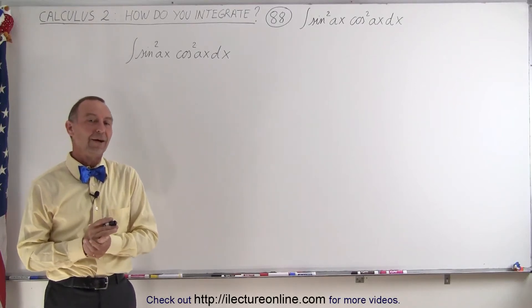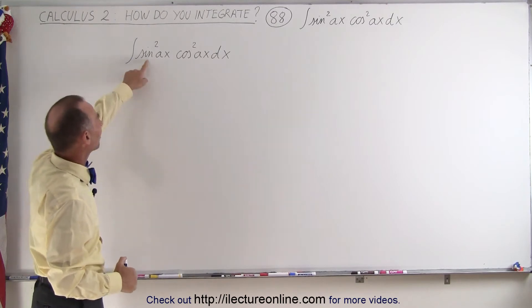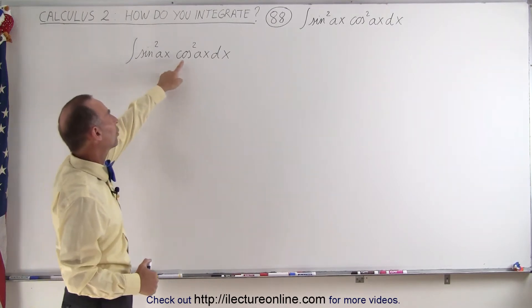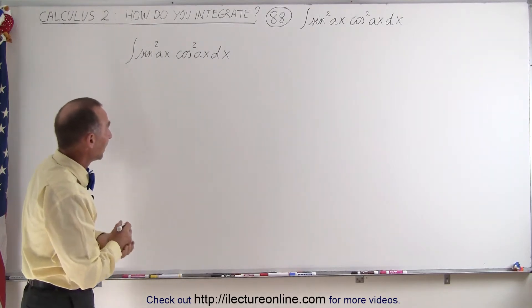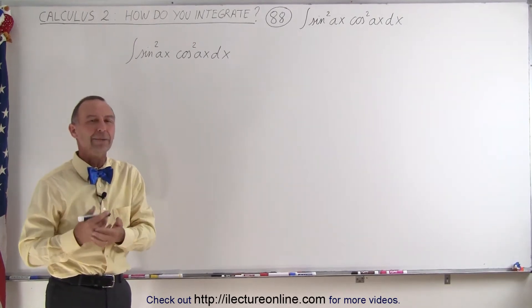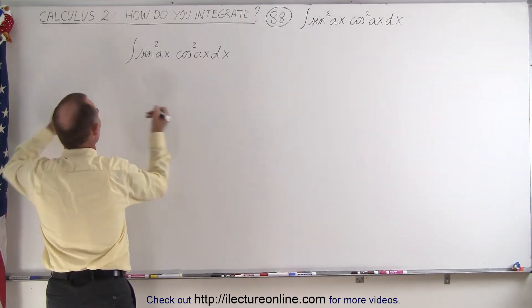Welcome to our lecture online. Our next integral is a little bit different again. In this case, we have the sine squared of Ax and the cosine squared of Ax, so we're squaring the sine and the cosine. We're going to need to find the appropriate identity, and the one we can probably use for this will be as follows.